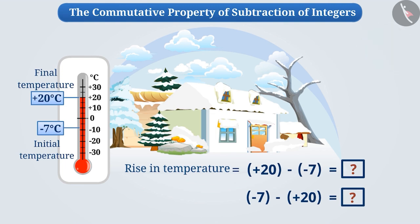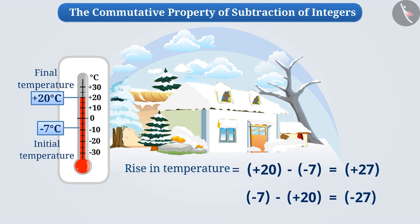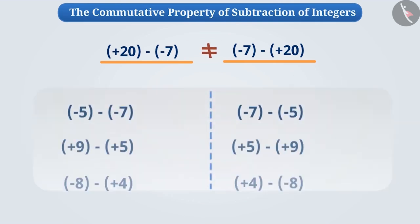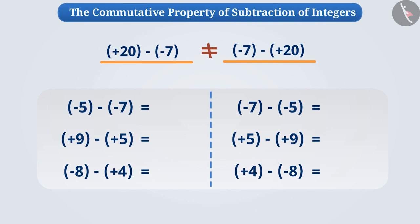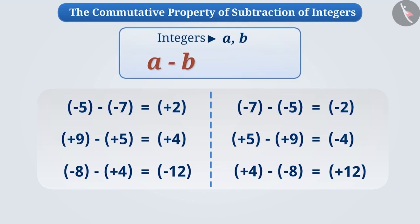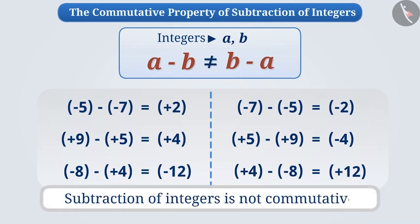The result will not be equal. Plus twenty minus minus seven will result in plus twenty-seven, while minus seven minus plus twenty will result in minus twenty-seven. In both cases, the result is not equal. Hence, plus twenty minus minus seven is not equal to minus seven minus plus twenty. This shows that the result of the subtraction of any two integers is not equal to the result obtained by changing the order. That is, the subtraction of integers is not commutative.